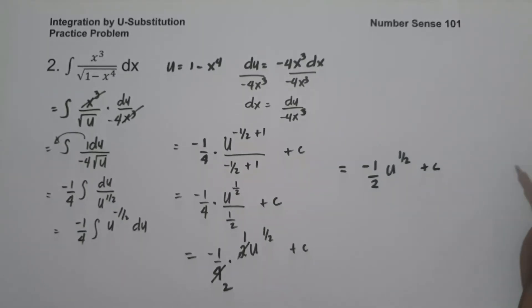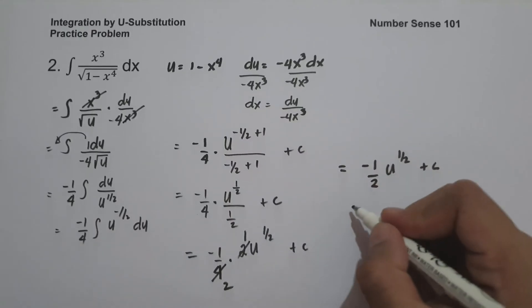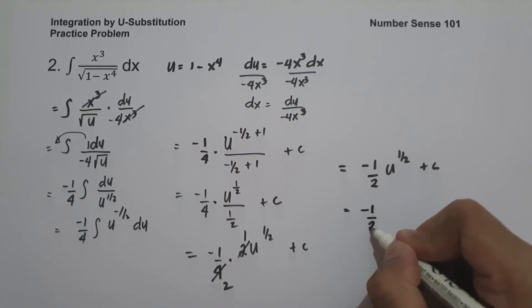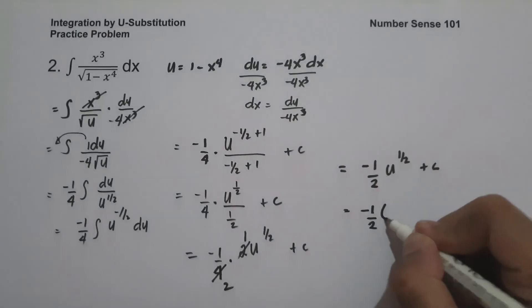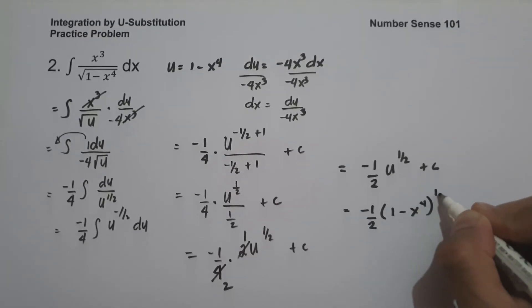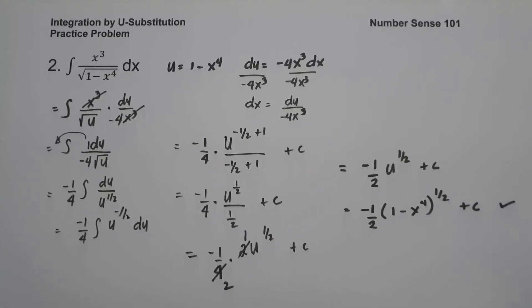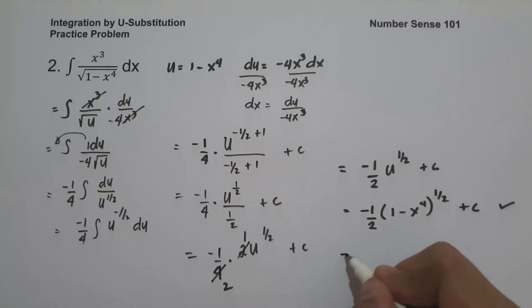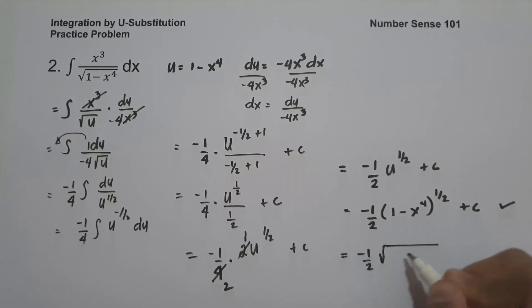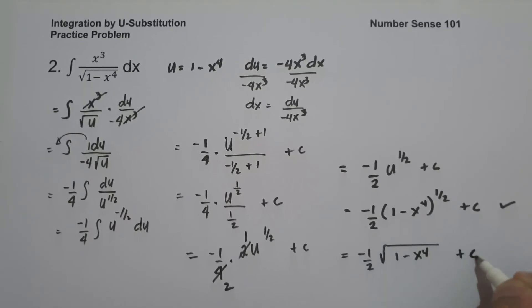Substituting back the value of u, which is 1 minus x raised to 4, the answer is negative one-half times (1 minus x raised to 4) raised to one-half plus c, or equivalently, negative one-half times the square root of (1 minus x raised to 4) plus c.